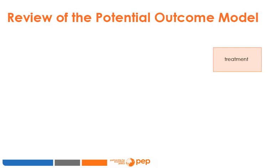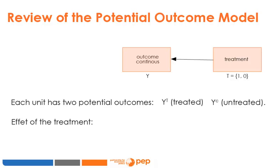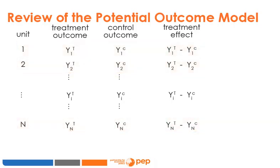We are interested in estimating the expected effect of a binary treatment on a continuous outcome. For example, a treatment could be participation in a training program with the outcome being income or wages. Each unit has two potential outcomes: Yt denotes the outcome of a unit exposed to the treatment, and Yc is the outcome when it does not benefit from the treatment. If both outcomes were observed — which is not possible — the effect of the treatment would be directly measurable by Yt minus Yc. We could estimate the treatment effect for each unit 1 through N, and the expected effect would be the empirical average of all effects.